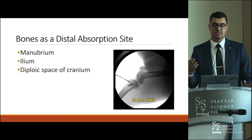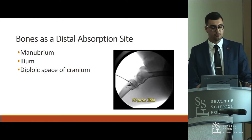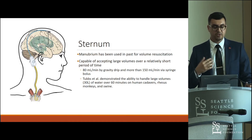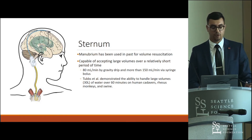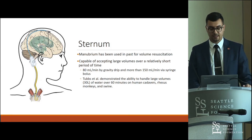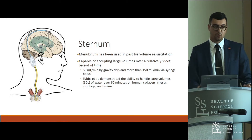Three bones are proposed as distal absorption sites: the manubrium, the ilium, and the diploic space of the cranium. The manubrium has been used for volume resuscitation and is capable of accepting large volumes quickly. One study showed it could accept 80 mL per minute by gravity drip and 150 mL per minute via syringe bolus. Tubbs et al. demonstrated the ability to accept 30 liters of water over 60 minutes, tested on fresh human cadavers, monkeys, and swine.